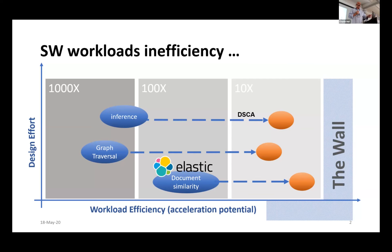The GPU gets the workload from the blue sphere toward the orange sphere, almost touching the wall, with acceleration potential up to 10x. Graph traversal is the problem class with the most potential for acceleration. Document similarity — or part of Elasticsearch functionality — stays at around 100x. The y-axis is the design effort: lowest for document similarity, higher for graph traversal, and highest for inference.